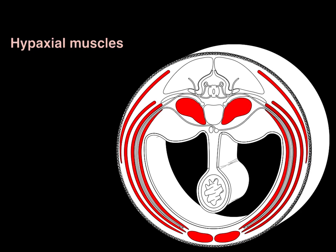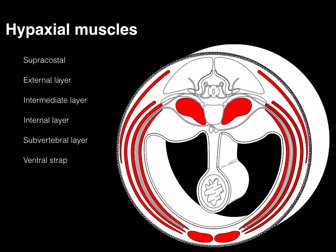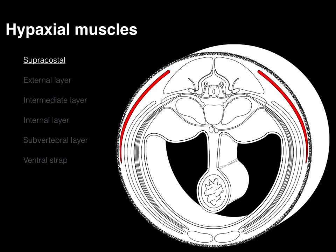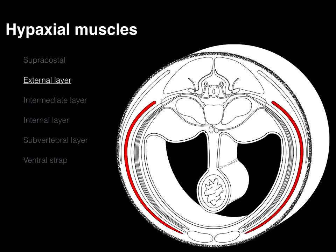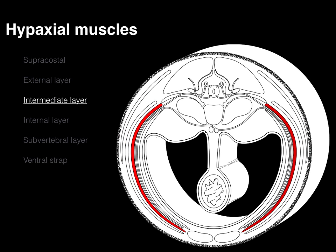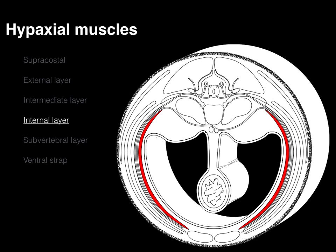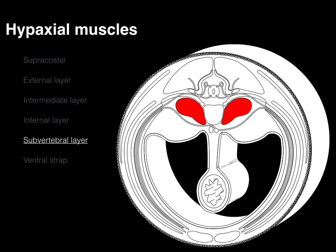Those six layers go from supracostal to ventral strap. Starting with the first one, the supracostal — supra meaning 'upon,' costal meaning 'ribs' — it's the most superficial of these four layers of the lateral wall. Then there's an external layer, an intermediate layer, an internal layer, then the subvertebral — sub meaning 'below the vertebrae' — and then there's the ventral strap muscle along the front.